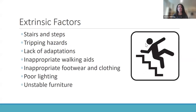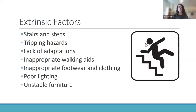Examples of extrinsic or environment-related factors include falling on stairs or steps, falling due to tripping hazards, having a lack of adaptations, inappropriate walking aids, footwear and clothing, poor lighting in the environment, or unstable furniture.